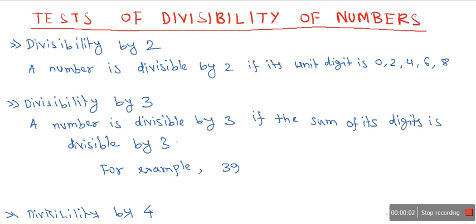Welcome to this tutorial on tests of divisibility of numbers. Let's see first the divisibility of a number by 2. It's very simple: if a number has its unit digit as 0, 2, 4, 6, or 8, then it is divisible by 2. In other words, an even number is divisible by 2.